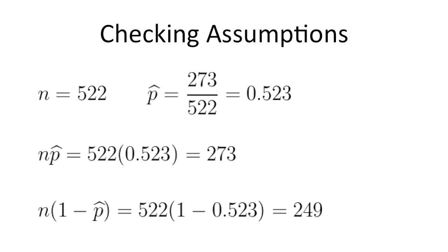Both n times p hat and n times 1 minus p hat are greater than or equal to 10, so this assumption has been met. We can use the normal approximation method.